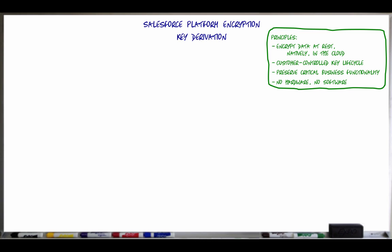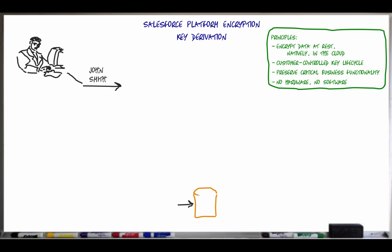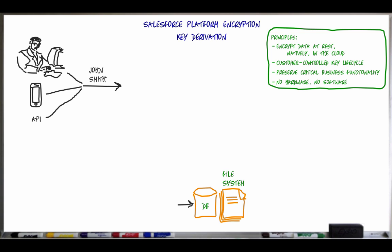In a typical scenario, a user would be sitting at a desktop using the browser to enter data. Some of this information might include sensitive data. Therefore, according to some organizations' information security policies or third-party agreements, some of this sensitive data may need to be encrypted when it is persisted to the Salesforce multi-tenant database. Also, files and attachments containing sensitive information might need to be encrypted at rest. This data could also come into a Salesforce org through other channels, such as through a mobile device or through the API.